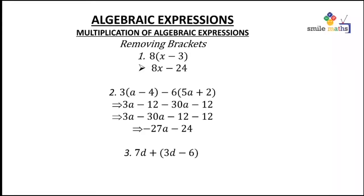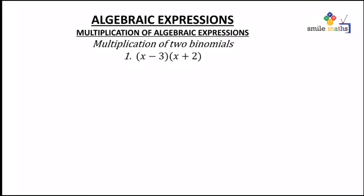Last example of this section: 7d + (3d − 6). Students mostly make a mistake here by multiplying 7d by the terms in the bracket, which shouldn't happen because of the addition sign — it makes them two different terms. There is an implied 1 in front of the bracket, so 1 multiplies every term inside: 1 times 3d gives 3d, minus 1 times 6 gives 6. So 7d plus 3d gives us 10d minus 6.